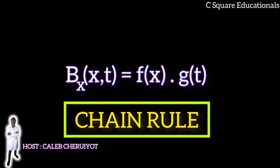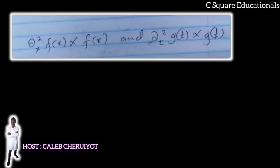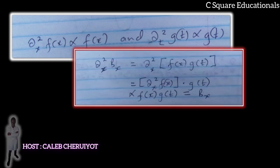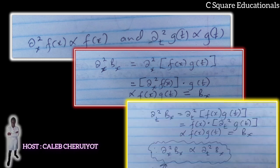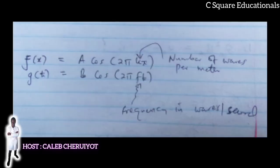The product of a function that depends only on space times a different function that depends only on time. Looks like the good old chain rule is in our favor. If partial X squared Fx is proportional to Fx and partial T squared GT is proportional to GT, that is, there are sine and cosines, then we have partial X squared BX as shown. Also partial T squared BX as shown. And so we see that partial X squared BX is proportional to partial T squared BX, which is exactly what we need. Now, let us consider these two functions, our separable solutions. F is the frequency, that is waves per second. K is the number of waves per meter. You can think of Kx as the spatial frequency analogous to Ft, which is the time frequency.